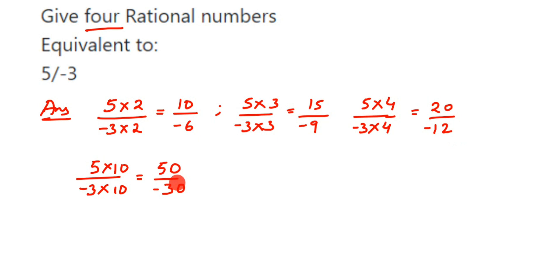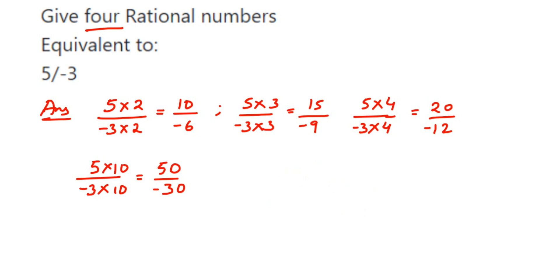Now, why are they equivalent? If you look at 10 upon minus 6, it is equivalent to 5 upon minus 3 because if I cancel it back — 2 threes are 6 and 2 fives are 10 — I get back 5 upon minus 3. That is why we call them equivalent rational numbers.